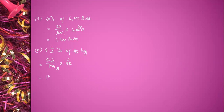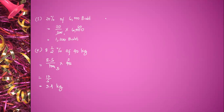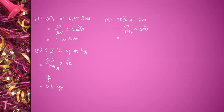17 divided by 5 is equal to 3.4 kilograms. Number three: 20% of 600 is equal to 20 divided by 100 times 600. 600 divided by 100 is equal to 6, and then 6 times 20 is equal to 120.